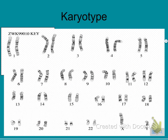Here's an example of a karyotype. This one has 23 pairs of chromosomes, or 46 total — a human karyotype. We see XY, which means it's male. XX would be female.